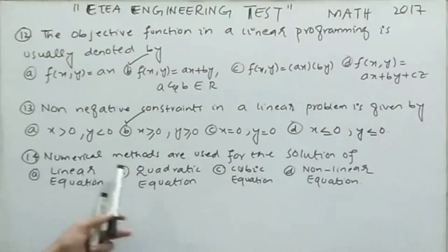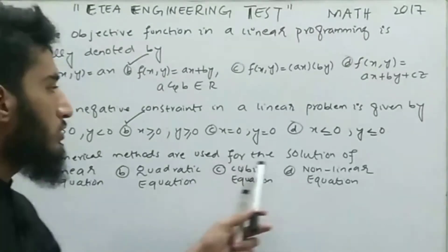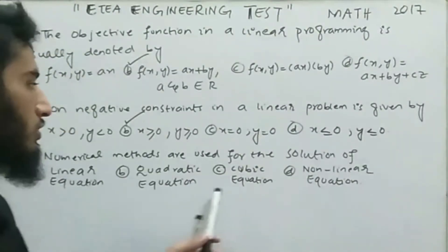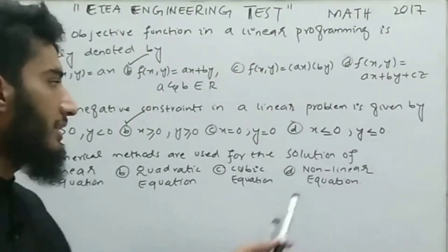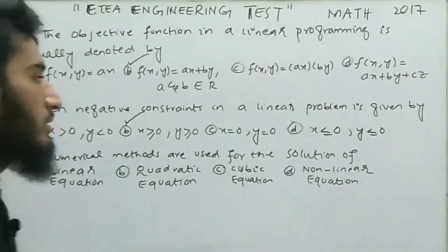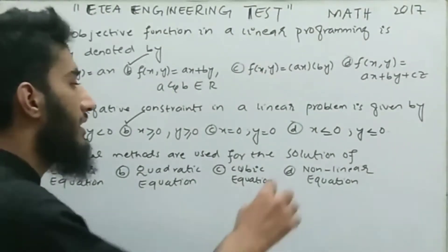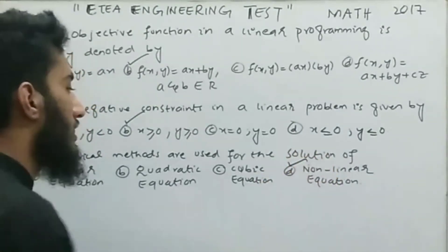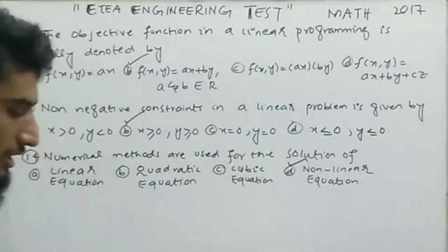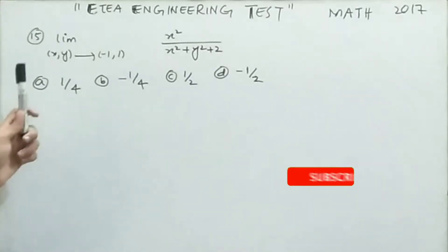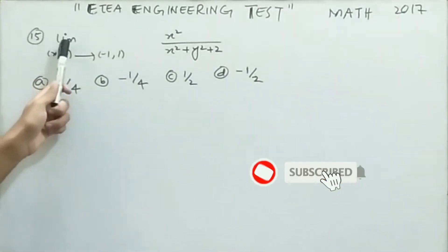MCQ number 14 tells that numerical methods are used for the solution of which type of equation — linear, quadratic, cubic, or non-linear. Remember, numerical methods are always used for the solution of non-linear equations. So the correct option for MCQ 14 is option number D.